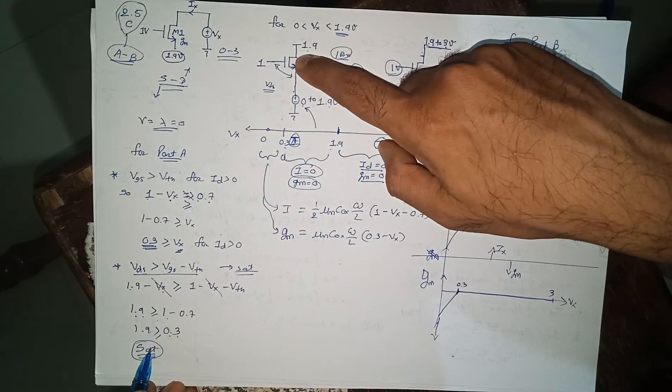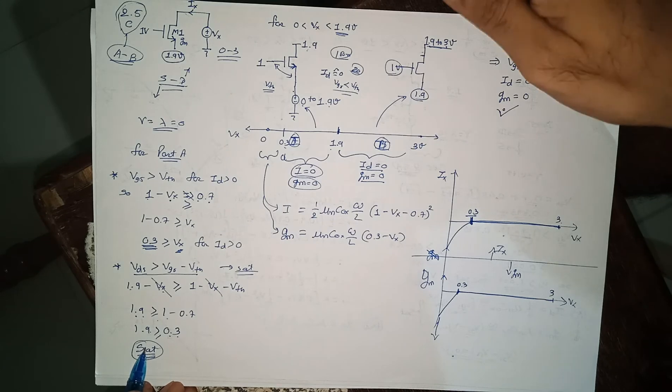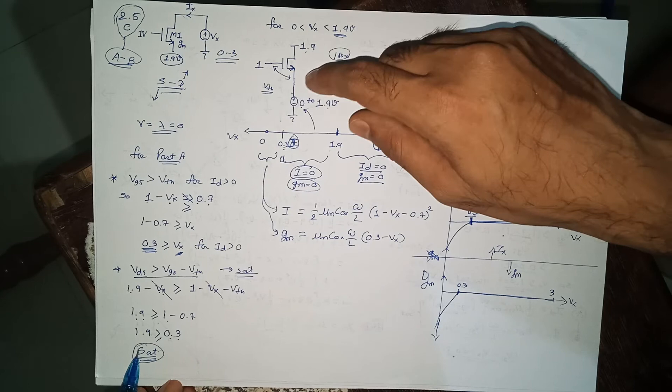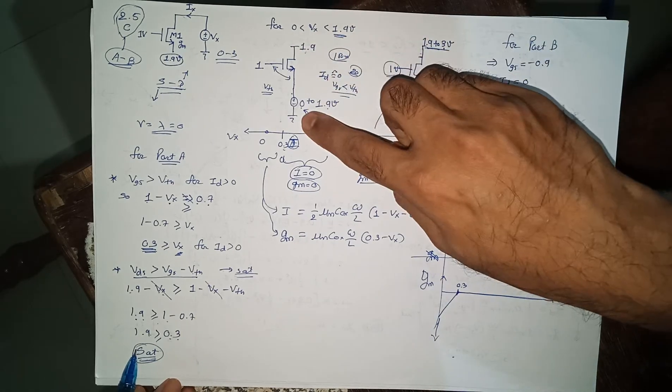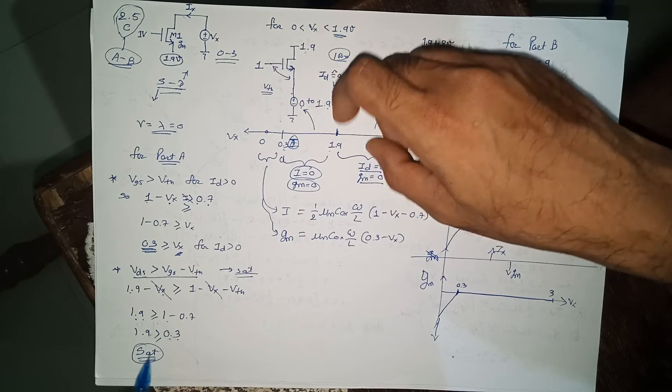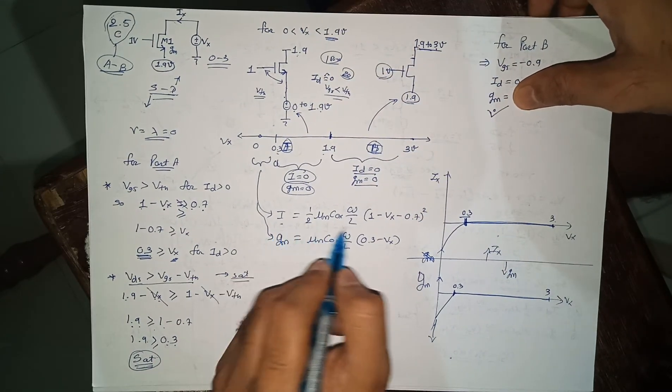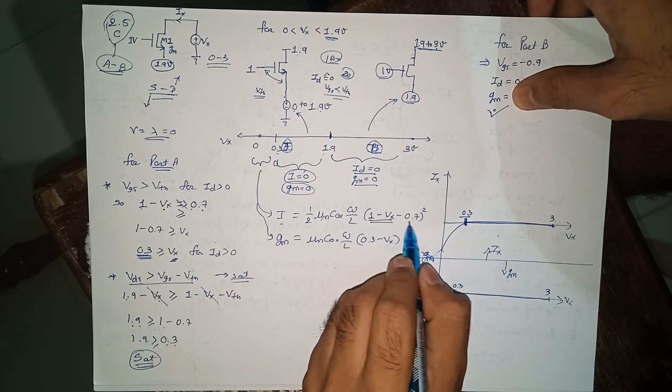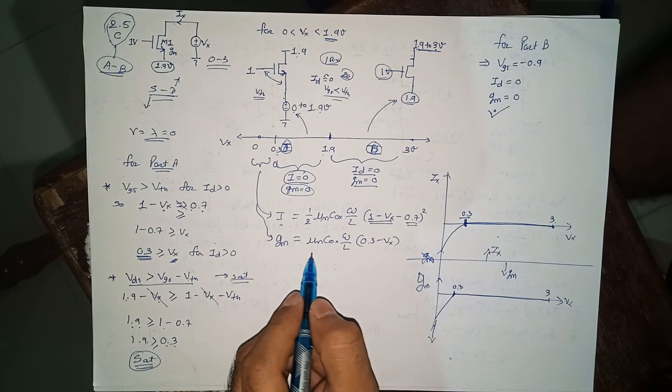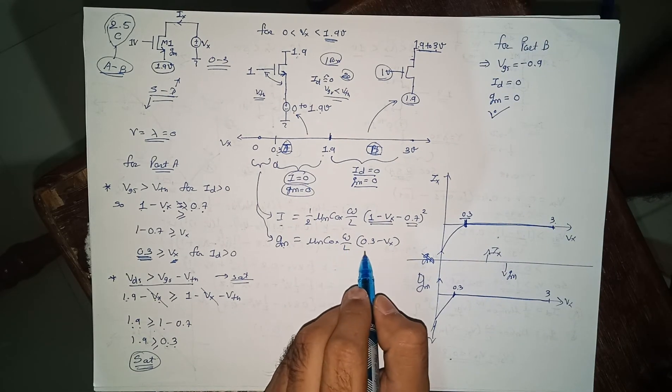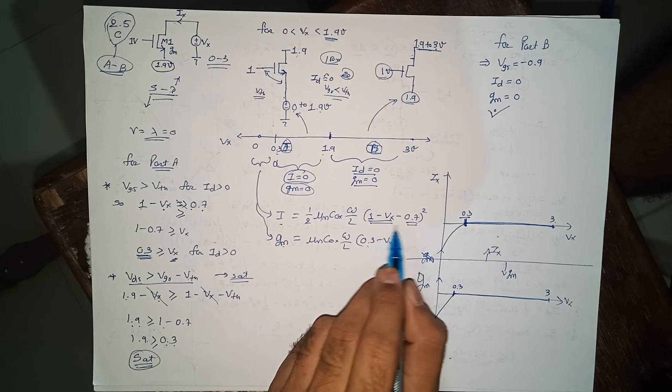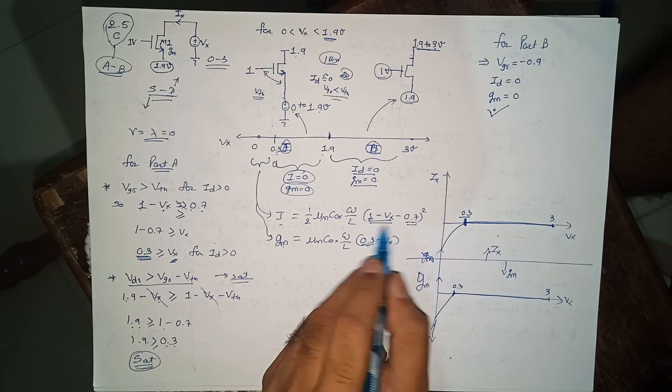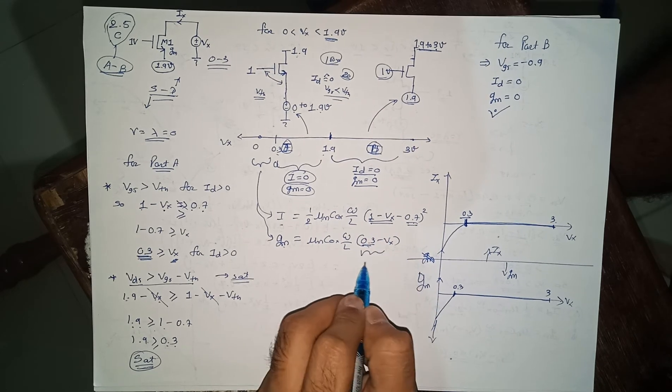So this device will be either in cutoff region, that means it will not start, and if it is going to start in this particular condition for 1.9 drain voltage and 1 volt gate, your device will be in saturation region. So it will follow this equation: one half mu n Cox W by L Vgs minus Vth square. And gm will be mu n Cox W by L Vgs minus Vth. This 0.1 and 0.7 is giving 0.3, 1 minus 0.7. So don't confuse, this is Vgs minus Vth only.